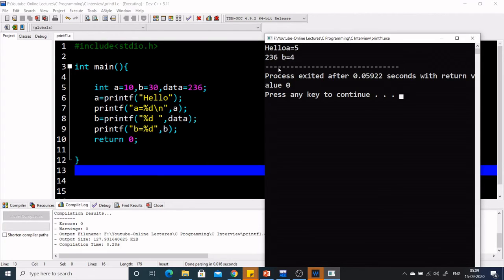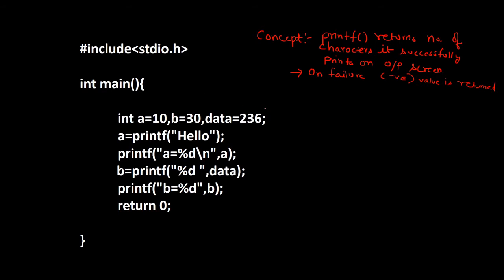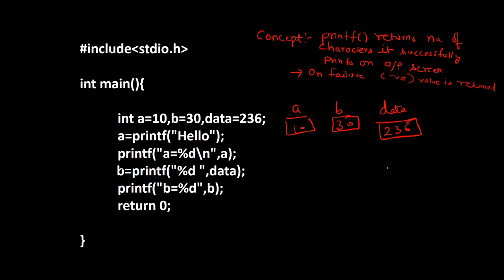Let's see how we are getting all this output. We are given a equal to 10, b as 30, and the third variable data as 236. Now we are printing 'hello' using the printf hello statement.